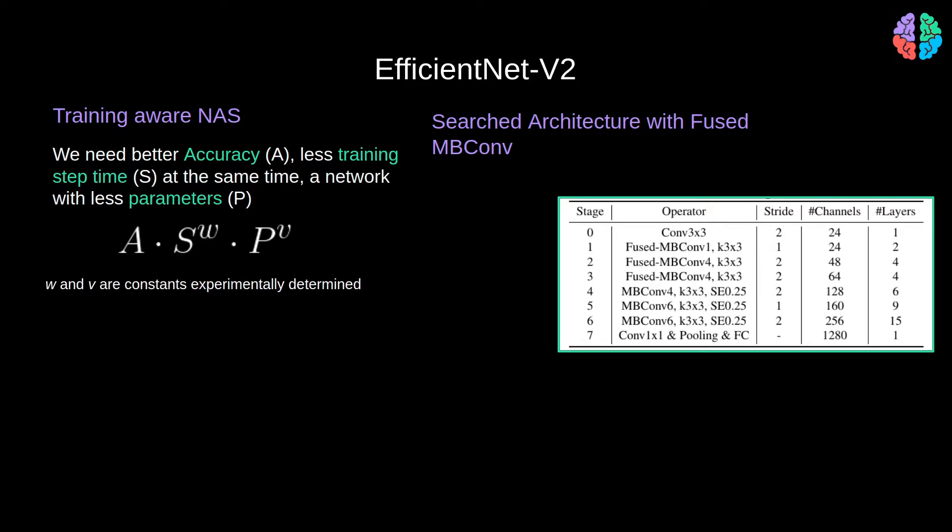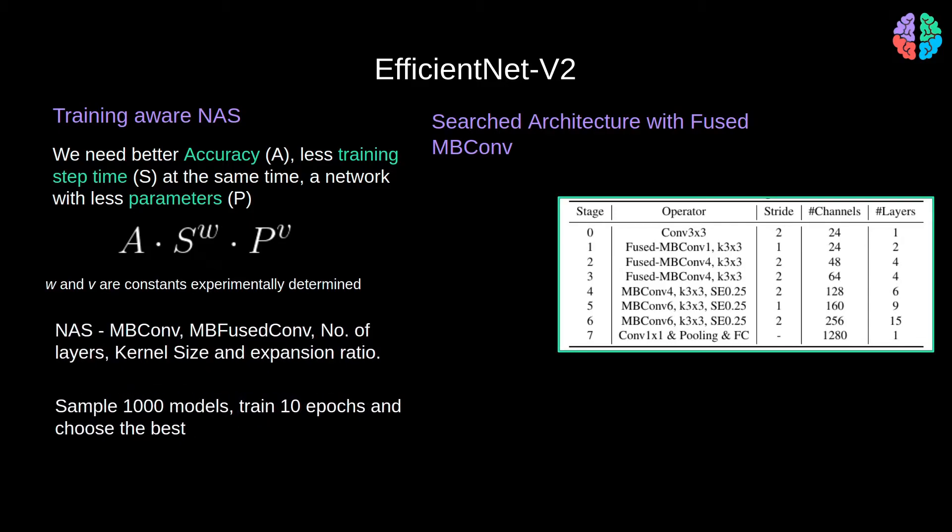So the architecture search should choose the best combination of MBConv, MBFusedConv, number of layers, kernel size and expansion ratio. So they sample 1000 models with different parameters and train for 10 epochs and choose the top ones, ignoring the rest. We can see the result of the search in the table on my right.